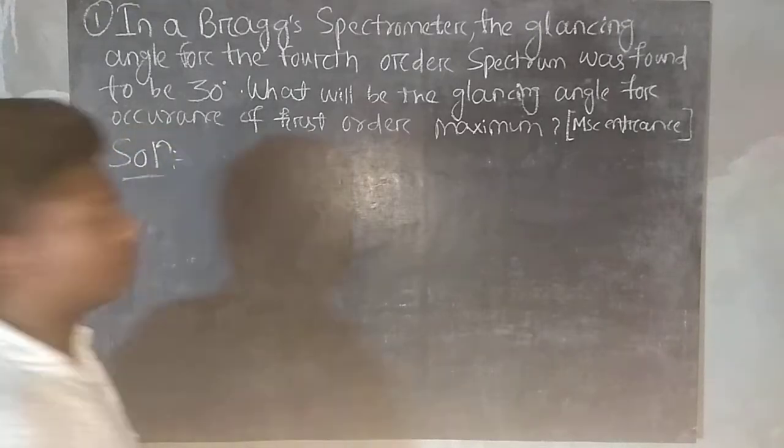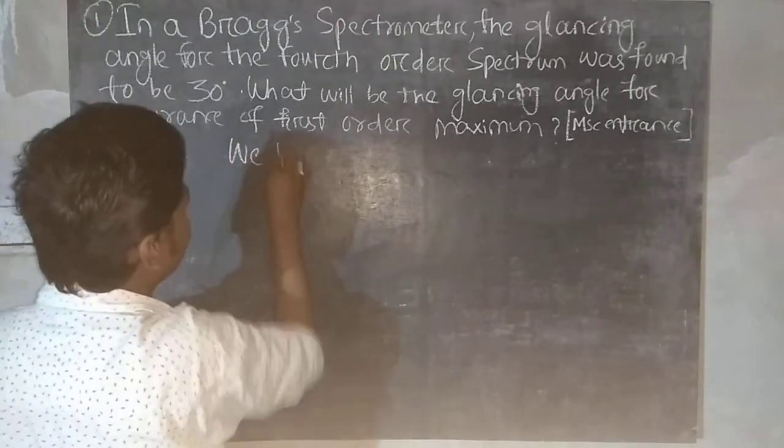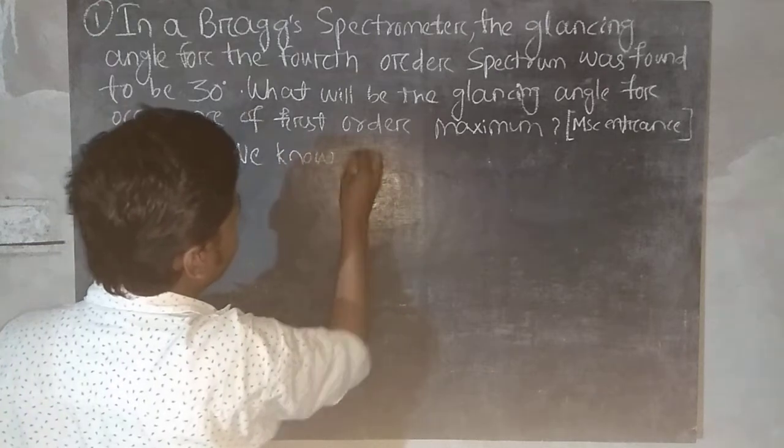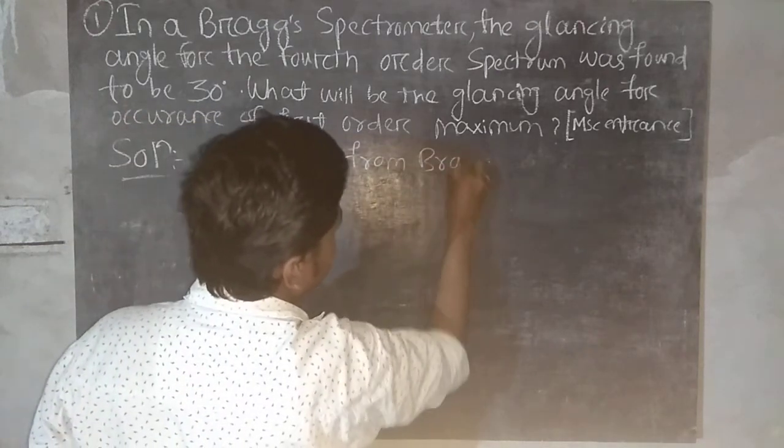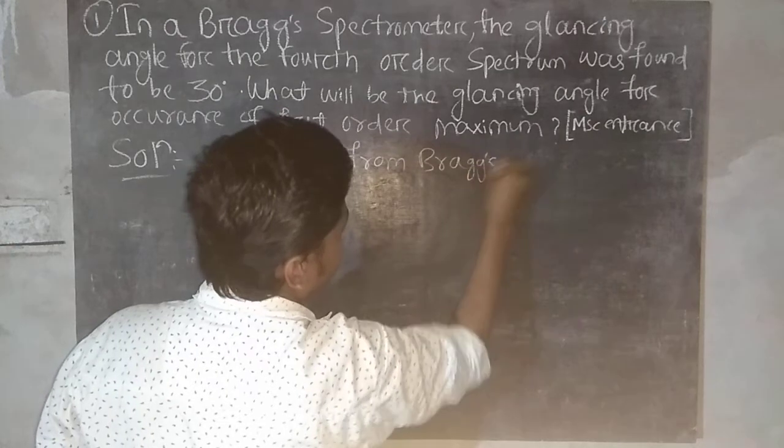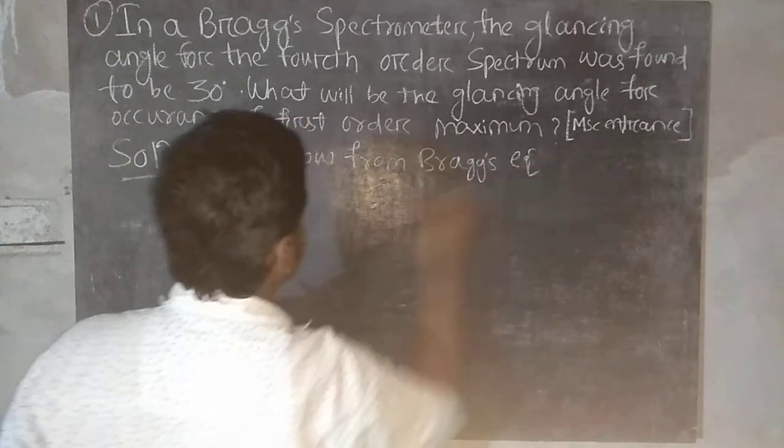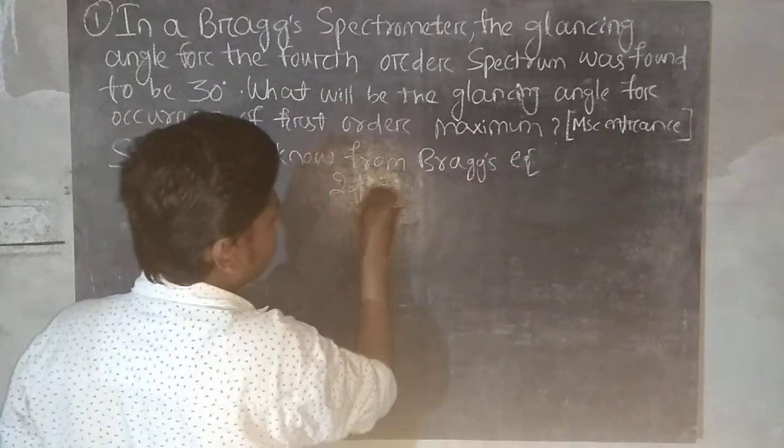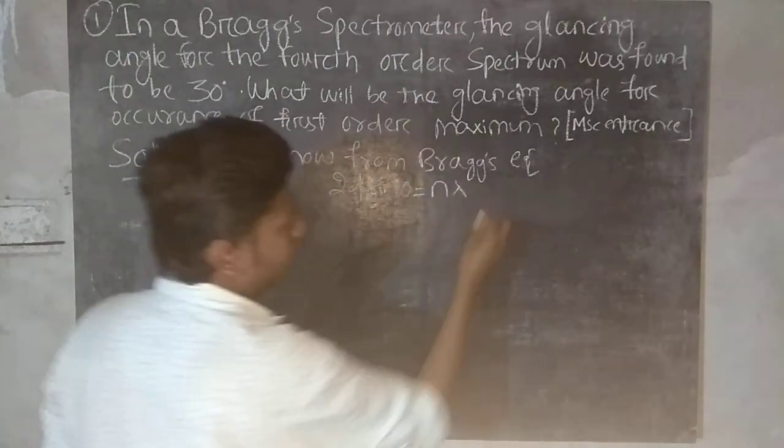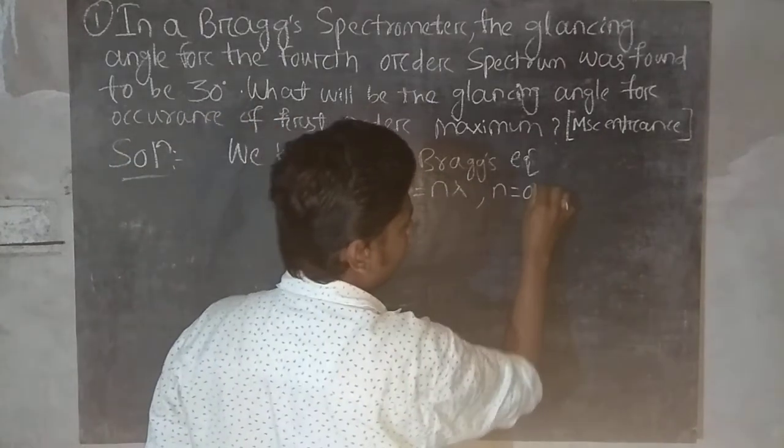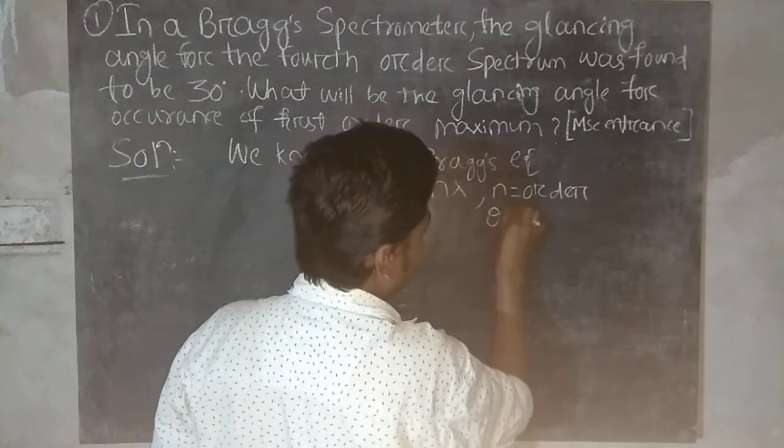We know from Bragg's equation: 2d sin theta equals n lambda, where n is the order and theta is the glancing angle.